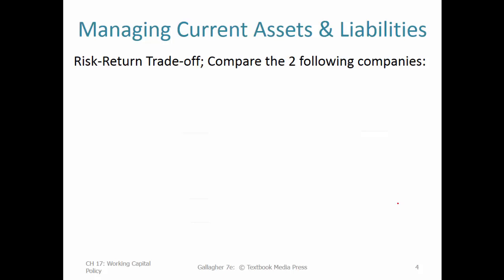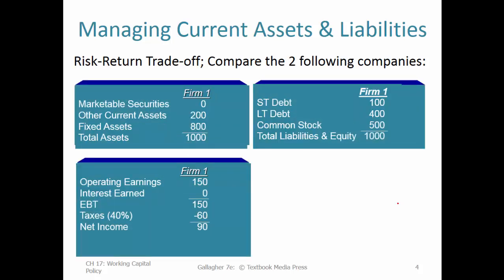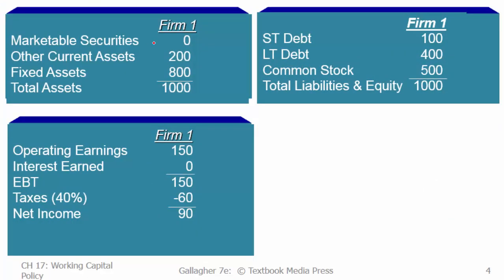To illustrate the risk-return trade-off, let's look at two companies side by side. Firm one's balance sheet shows: no marketable securities, $200 million in current assets, $800 million in fixed assets, for a total asset base of $1 billion. They have $100 million in short-term debt, $400 million in long-term debt, and $500 million in common stock — split evenly between debt and equity. Operating earnings are $150 million, no interest income, earnings before taxes $150 million, and with a 40% tax rate, net income is $90 million.